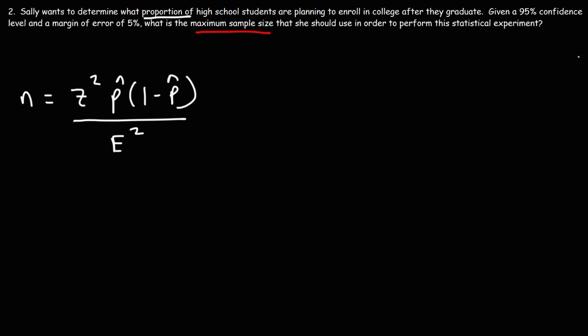So we're dealing with a 95% confidence level so we know that z is 1.96. The margin of error is 5% so converting that into a decimal we need to divide 5% by 100 so the margin of error is 0.05.